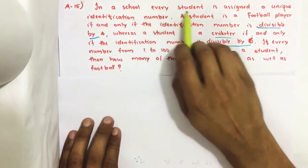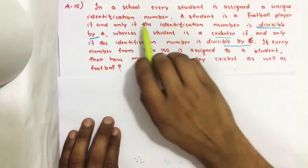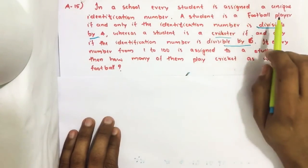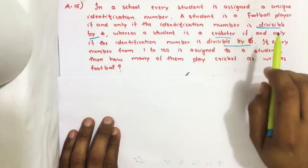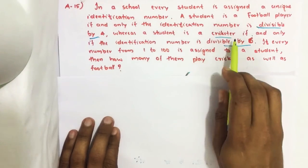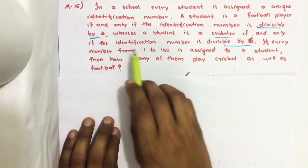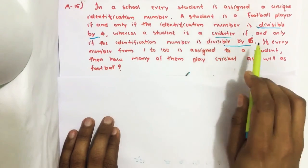In a school, every student is assigned a unique identification number. A student is a football player if and only if the identification number is divisible by 4, whereas a student is a cricketer if and only if the identification number is divisible by 6.